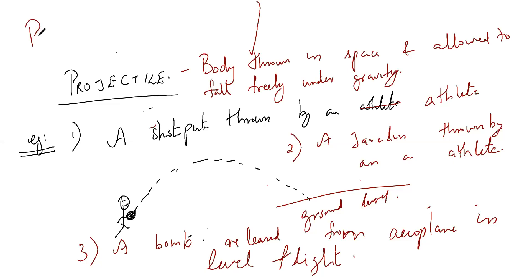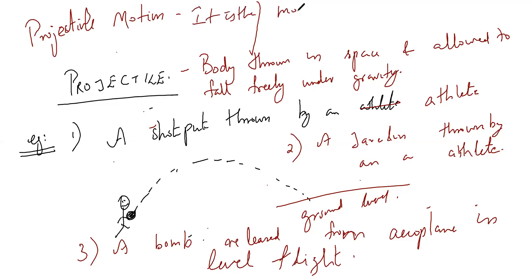If the exam question asks: what is projectile motion? You should write: it is a motion in which the body is thrown into space and allowed to fall freely under gravity.